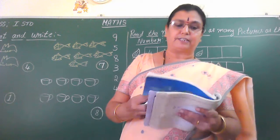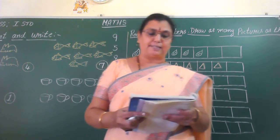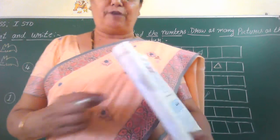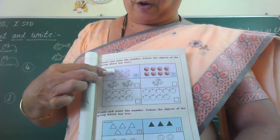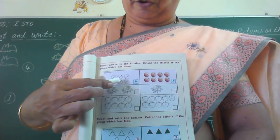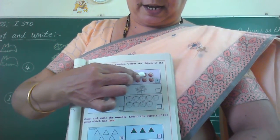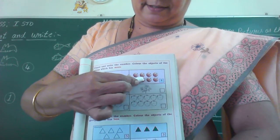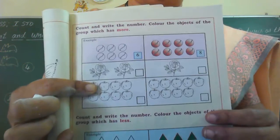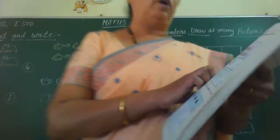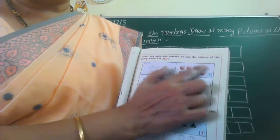Next page number 57. Count and write the number. Colour the object of the group which has more. Now we have to count and select which is more and which is less. How many balls are there in the first box? One, two, three, four, five, six. So in the box you have given six. Here one, two, three, four, five, six, seven, eight. Which is more children? Eight is more. So what they have told? Colour the objects of the group which has more.